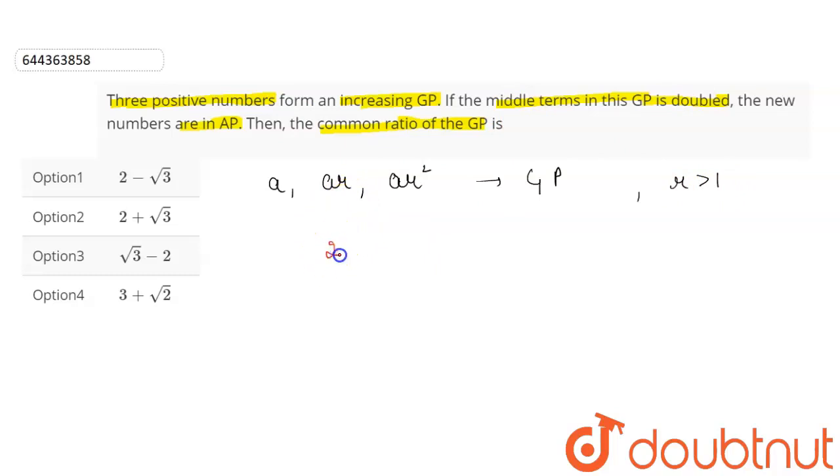is ar, if we make this ar into 2ar, then the new numbers are in AP. So it says a, 2ar, and ar square are in AP. So we have to find the value of r. Now, as they are